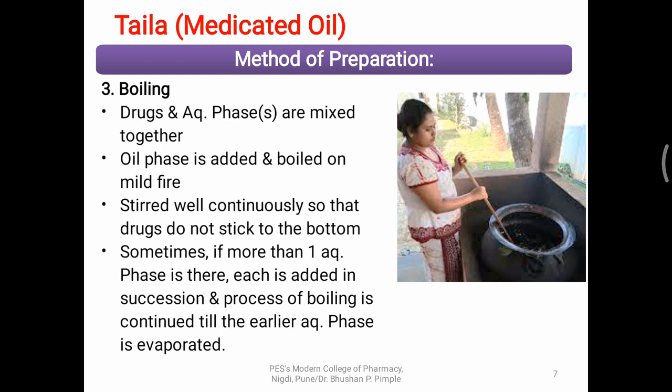If there are more than one aqueous phase — whether three, four, or five — each and every aqueous phase should be added in succession, one after the other. The formula specifies which aqueous phase should be added first, such as cow milk followed by water. Before adding the second aqueous phase, heating should be carried out so that the first aqueous phase is completely evaporated. This can be determined by observing the formation of the drug residue.